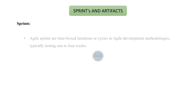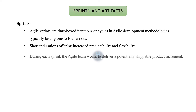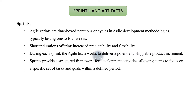The next topic is sprints and artifacts. In agile, sprints are time-boxed iterations or cycles in agile development methodologies, typically lasting one to four weeks, with shorter durations offering increased productivity and flexibility. During each sprint, the agile team works to deliver a potentially shippable product increment.